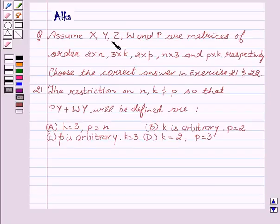Our question is assume X, Y, Z, W and P are matrices of order 2 cross N, 3 cross K, 2 cross P, N cross 3 and P cross K respectively.